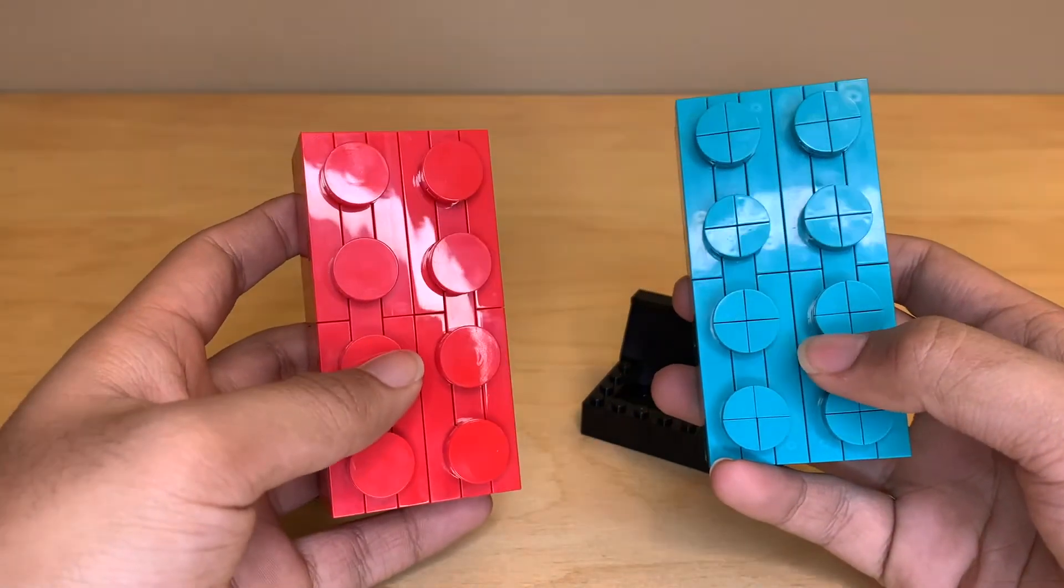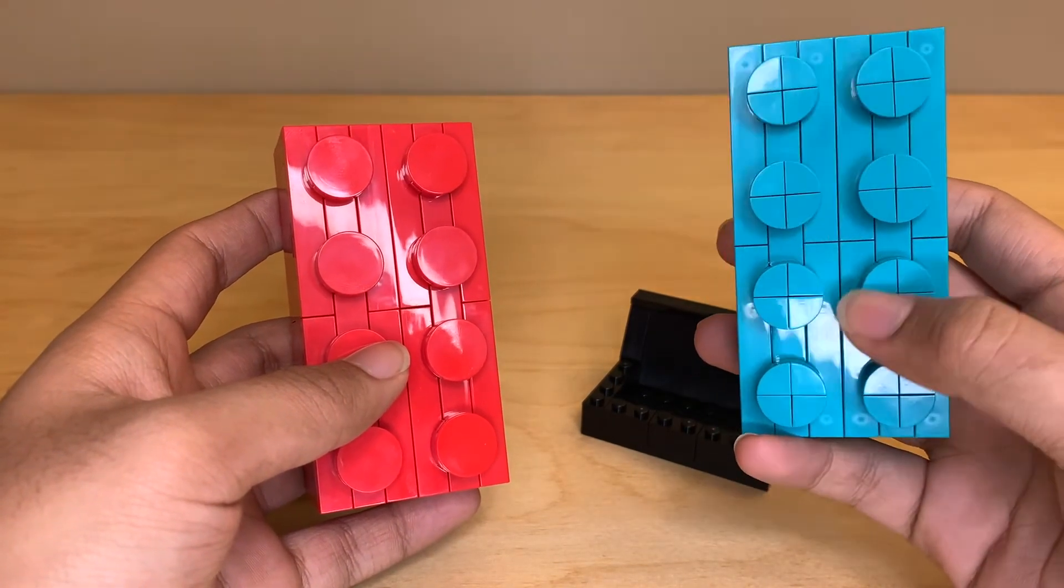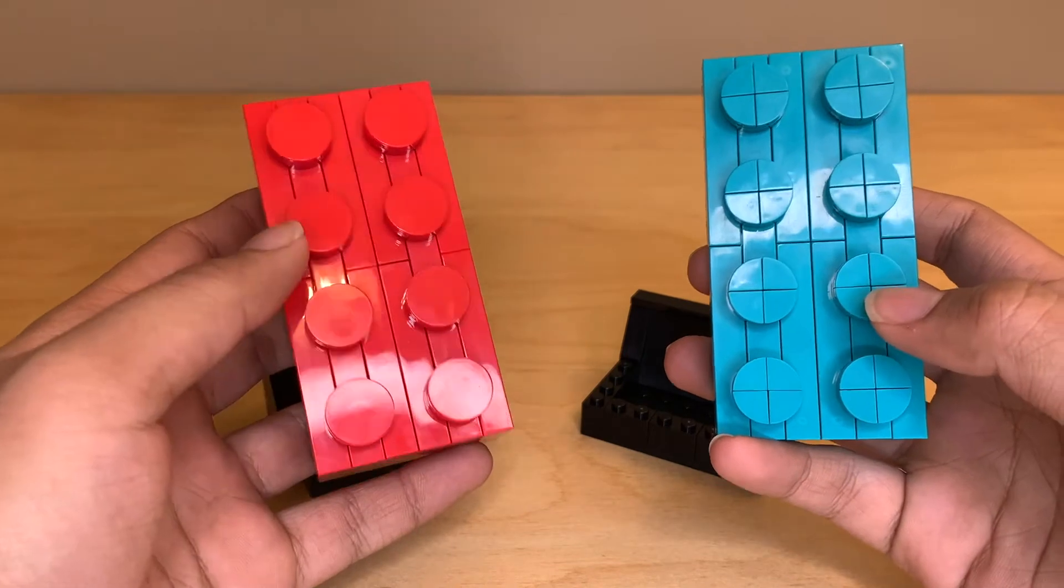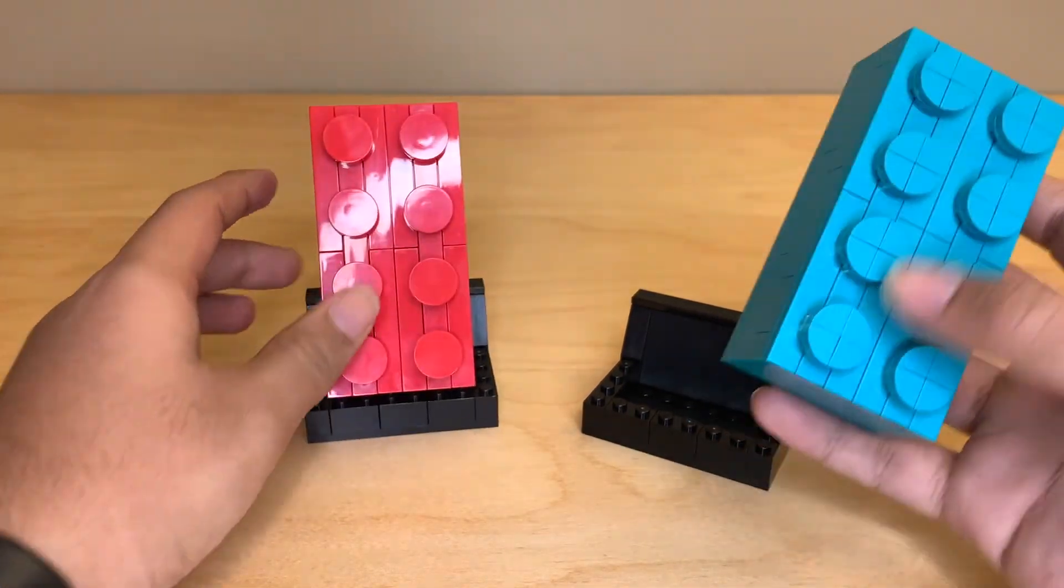But the biggest difference is with the studs. Over here you can see that they use the 1x1 quarter circle tiles, four of them on each stud. This one just uses 2x2 tiles. And I have to say I do like the look of the red one a lot better.